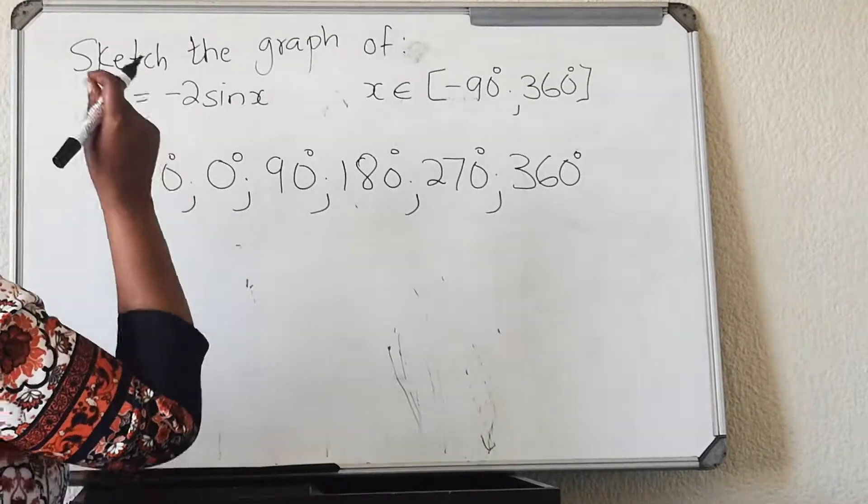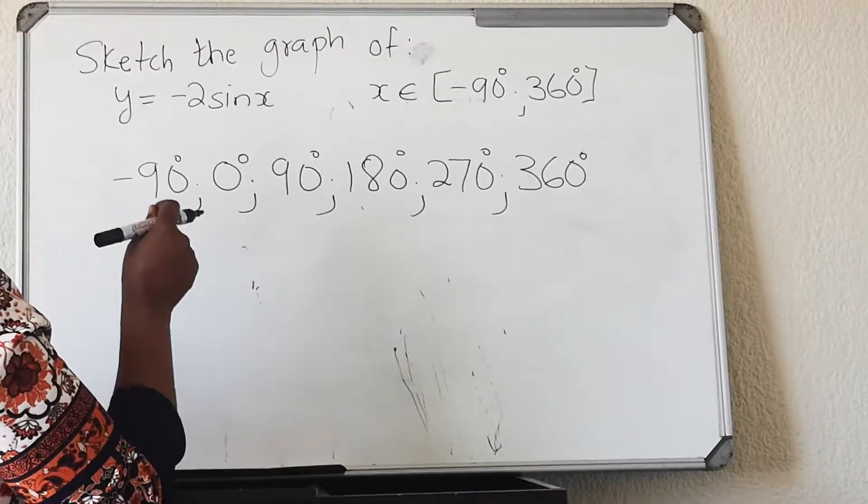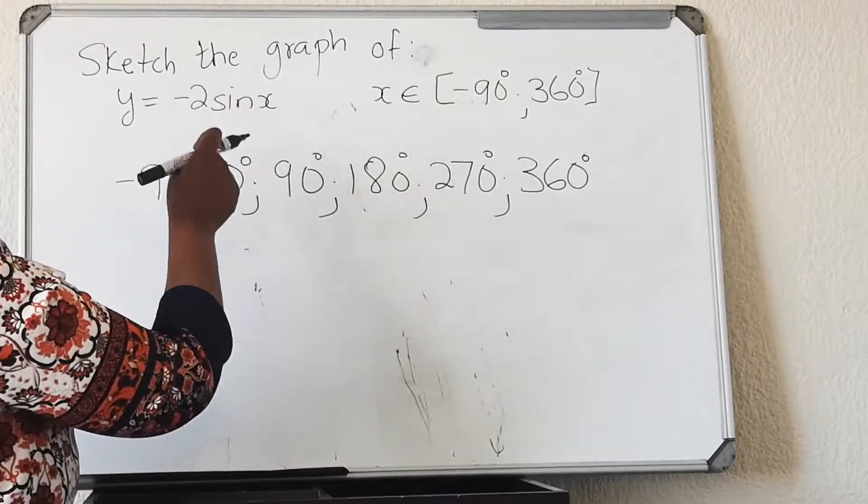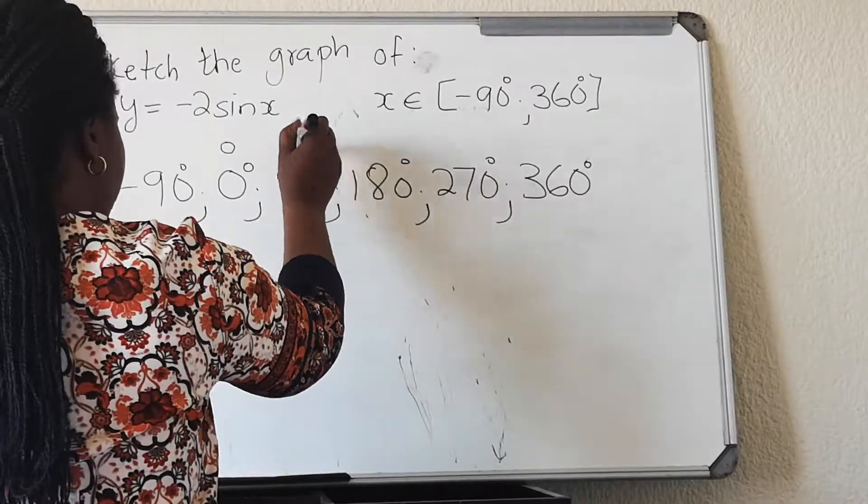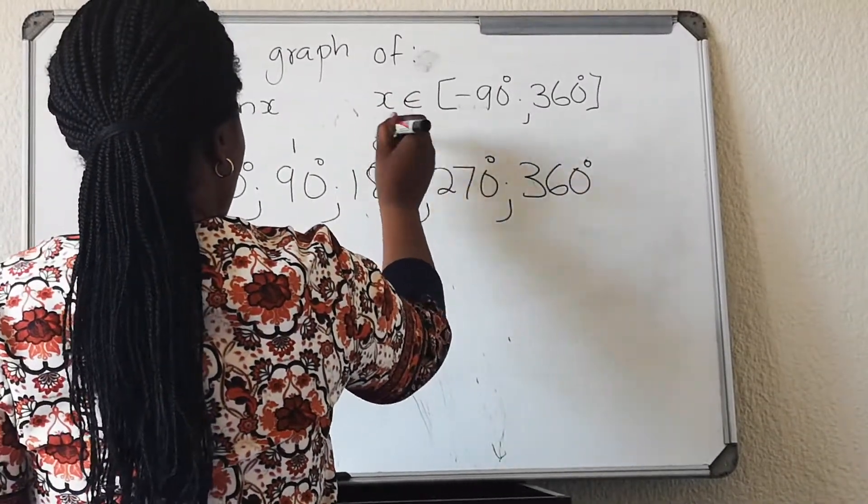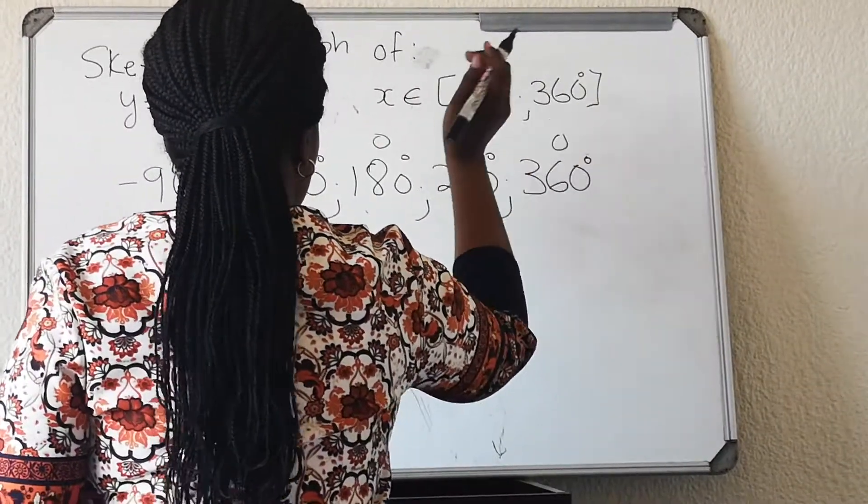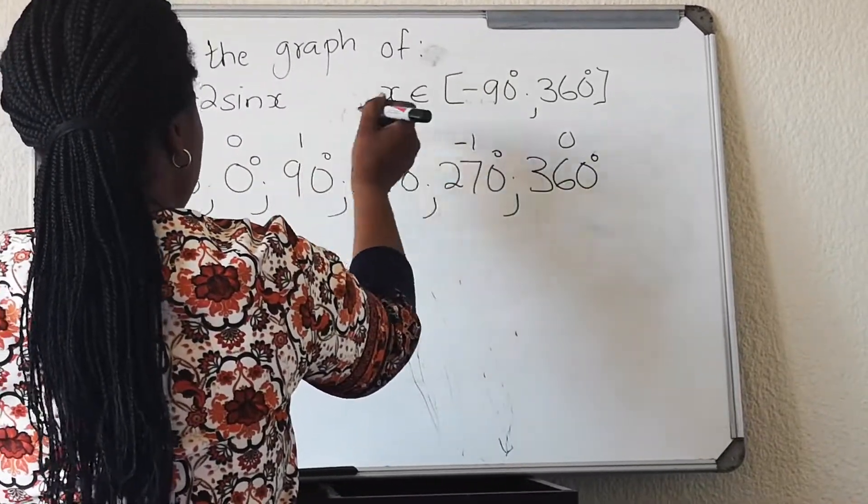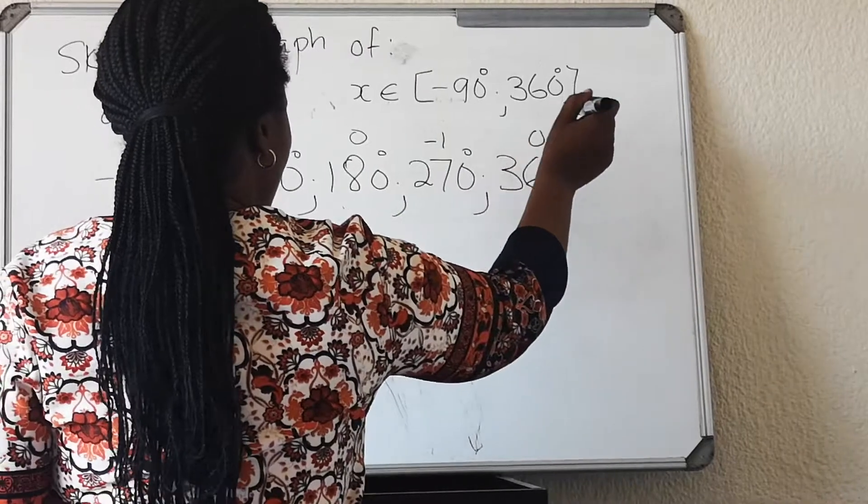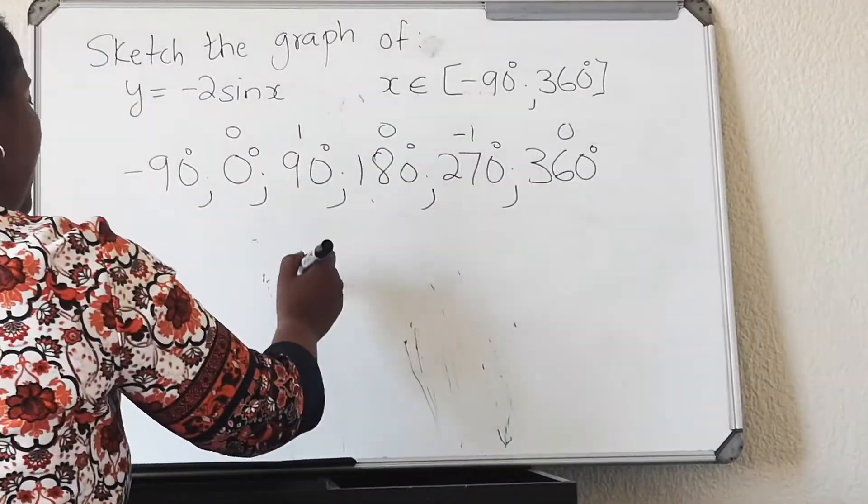After doing that, in the standard form, the y-intercept of the sine graph is 0 and 0. You go 0, then you have 1, then 0, 1, 0. No, minus 1. 0, 1, 0, minus 1.